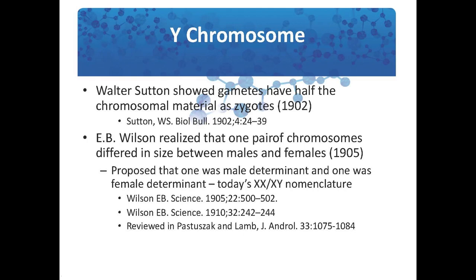In 1902, Walter Sutton showed that gametes have half the chromosomal material as zygotes — in other words, that gametes had a haploid complement of chromosomes. Then in a landmark 1905 paper, E.B. Wilson realized that one set of chromosomes differed in size between males and females, working on insects. She proposed that one chromosome was the male determinant and one was the female determinant, providing the basis for today's nomenclature where females have two X chromosomes and the male has an X and a Y chromosome.